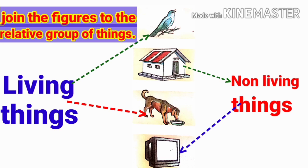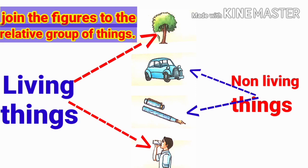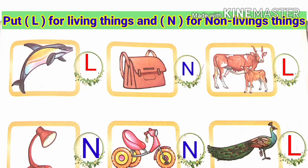Join the figures to the relative group of things. Living things: bird, dog. Non-living things: home, television. Living things: tree, boy. Non-living things: car, pen.